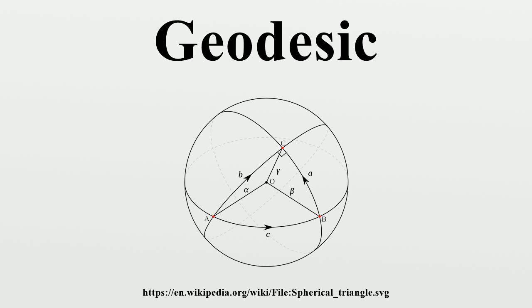The geodesic flow is a local ℝ action on the tangent bundle TM of a manifold M, where T(R, V) in TM denotes the geodesic with initial data V, so that g_t equals the exponential map of the vector tV. A closed orbit of the geodesic flow corresponds to a closed geodesic on M. On a Riemannian manifold, the geodesic flow is identified with the Hamiltonian flow on the cotangent bundle. The Hamiltonian is then given by the inverse of the Riemannian metric, evaluated against the canonical one-form. In particular, the flow preserves the Riemannian metric; when V is a unit vector, it remains unit speed throughout, so the geodesic flow is tangent to the unit tangent bundle. Liouville's theorem implies invariance of a kinematic measure on the unit tangent bundle.